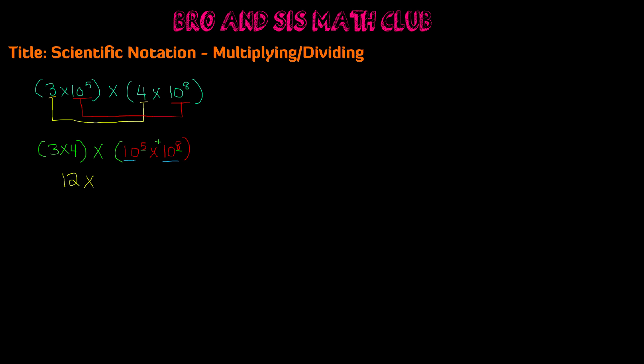The base stays the same, which is 10, and you add the exponents 5 and 8, which gives you 13. So the product of 3 times 10 to the 5th power times 4 times 10 to the 8th power is 12 times 10 to the 13th power, and this is our solution.